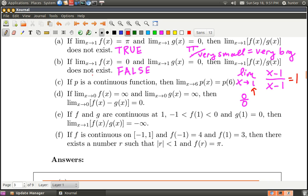Let's take a look at C. It says if P is a continuous function, then the limit as x goes to 6 of P(x) is P(6). This is very true because this is just the definition of being continuous at 6. What does it mean to be continuous at 6? It means that the limit as x goes to 6 of P(x) is just P(6). So if P is a continuous function, then yes, this is true—it's the definition of continuity.